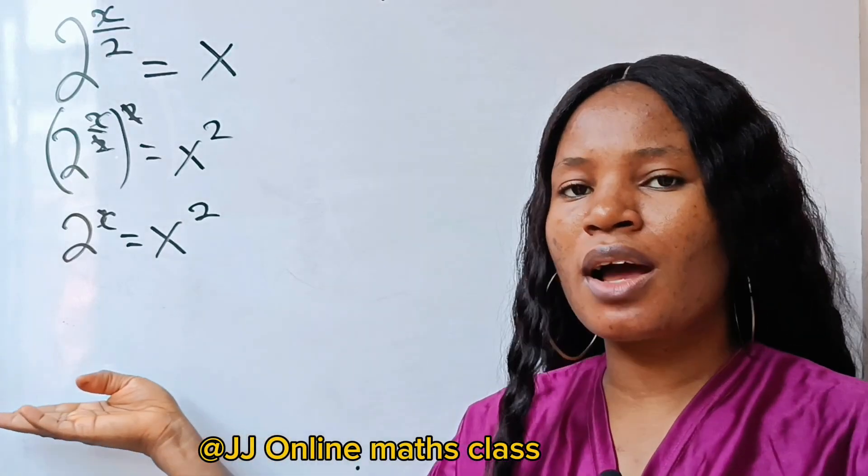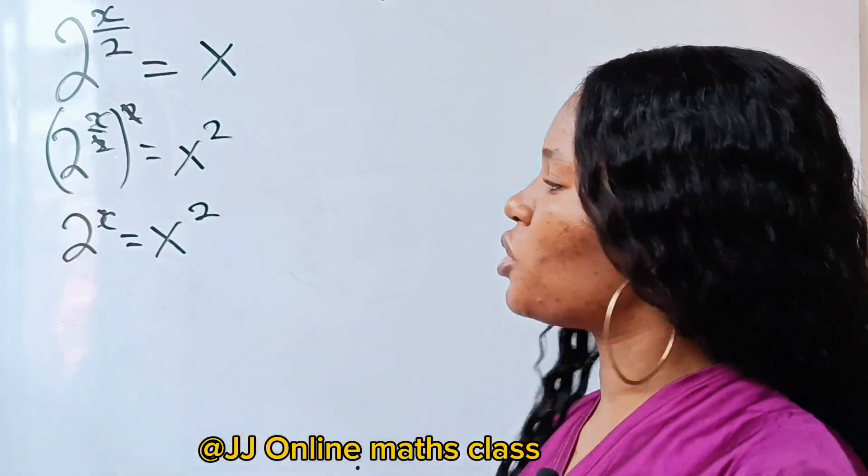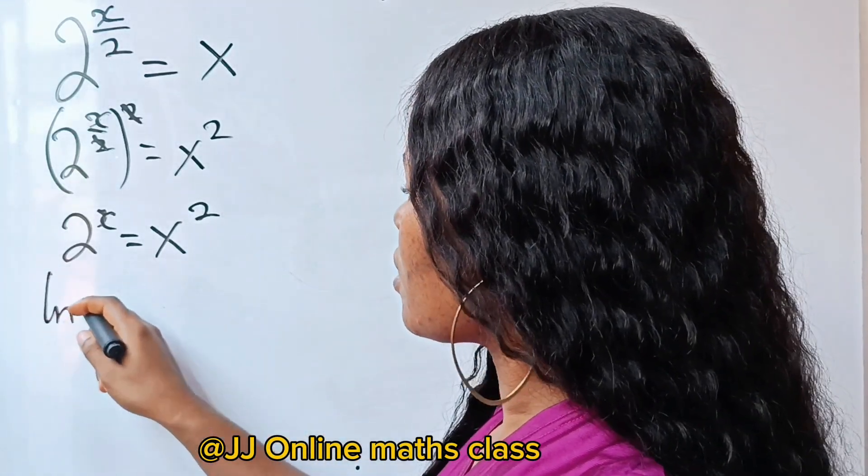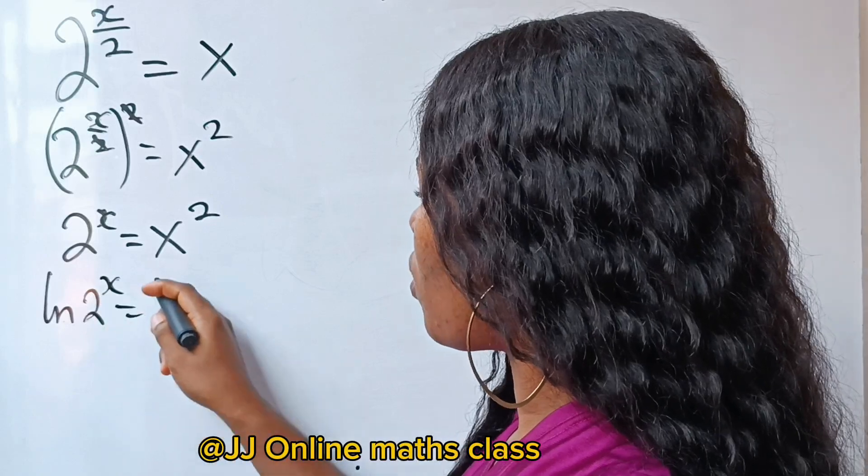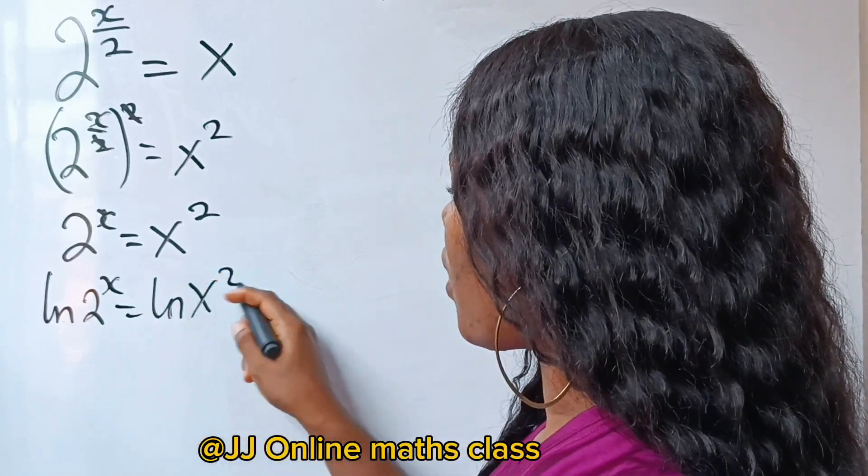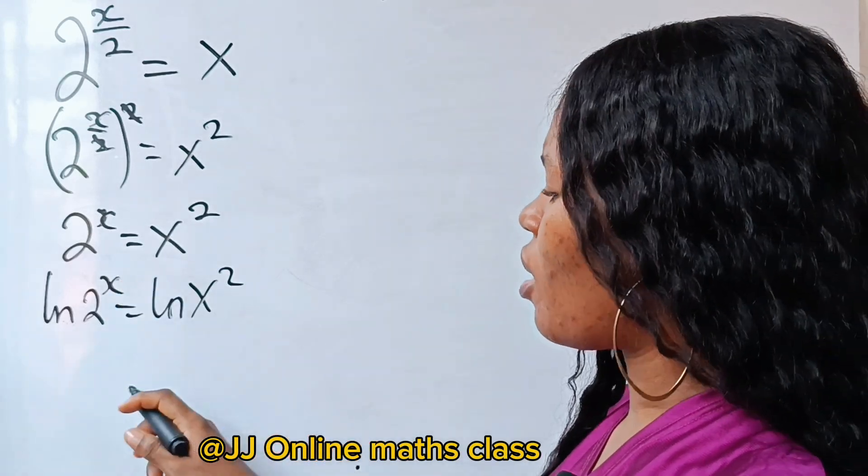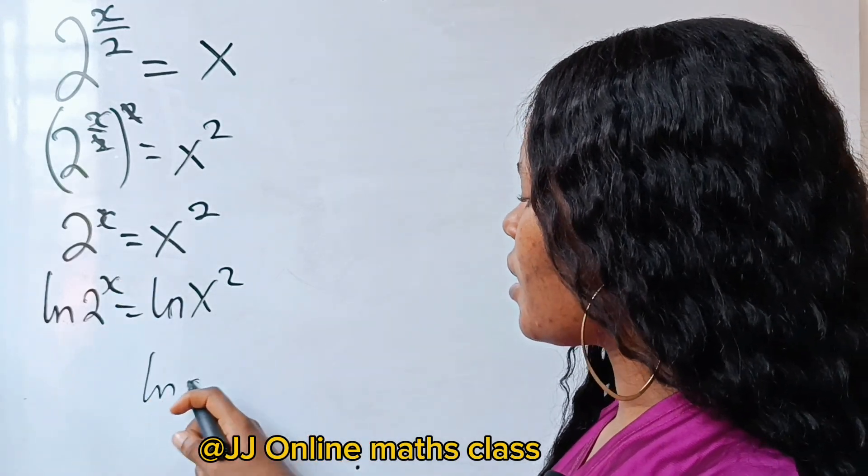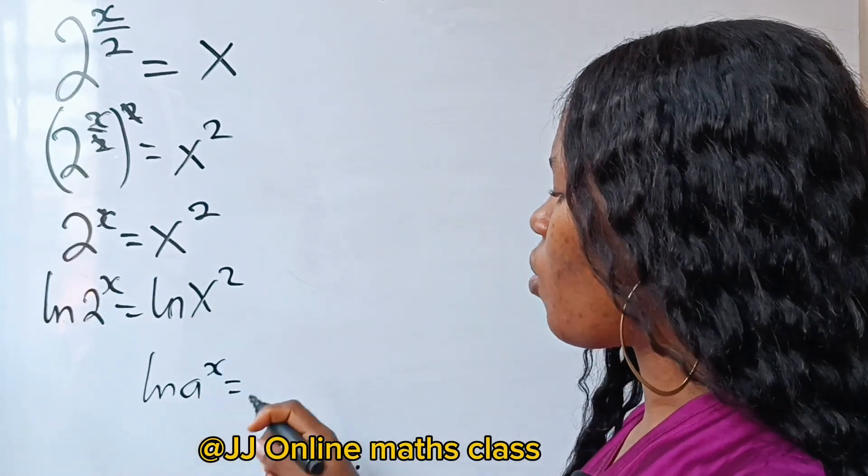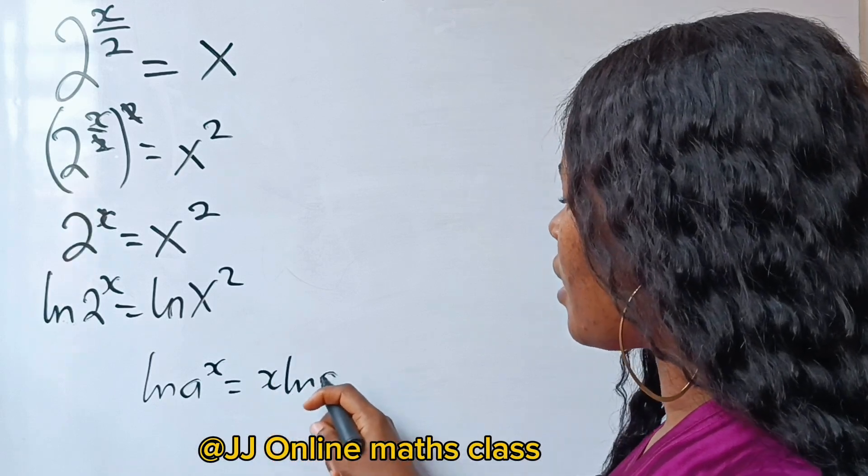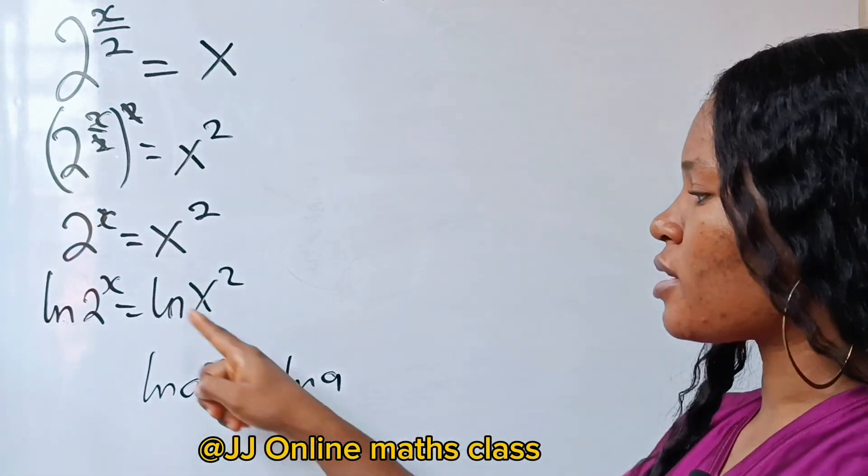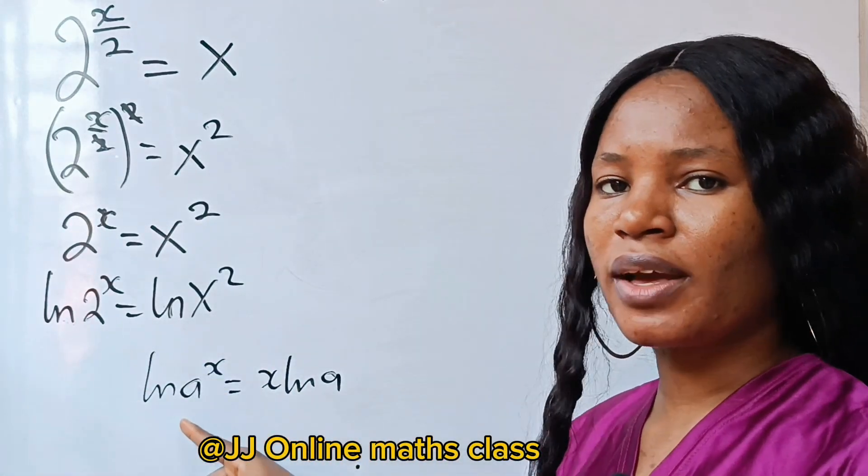Now let's take natural logarithm of both sides of this equation. So ln 2 to the power of x is equal to ln x to the power of 2. Now recall that ln a to the power of x is equal to x ln a.